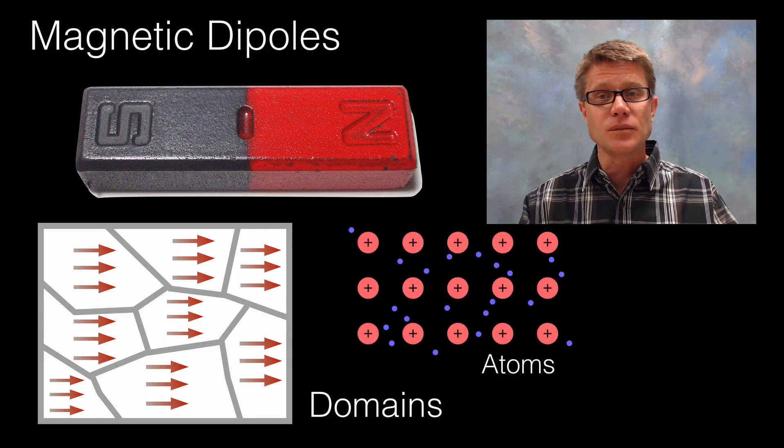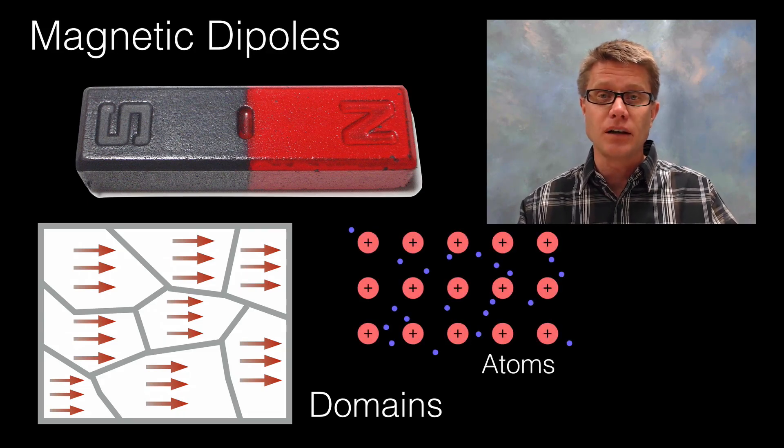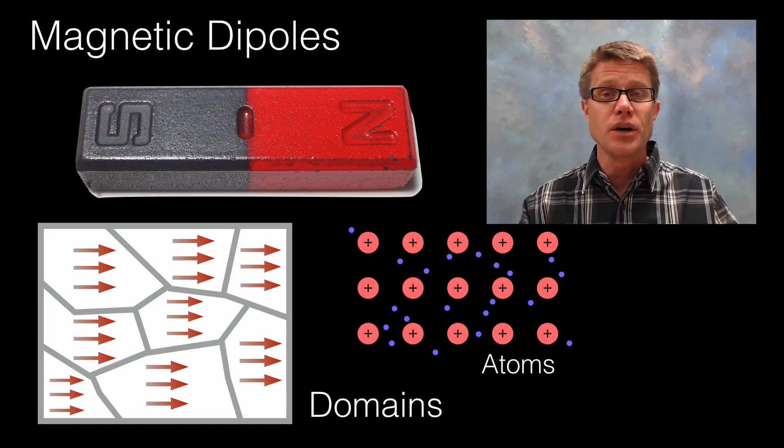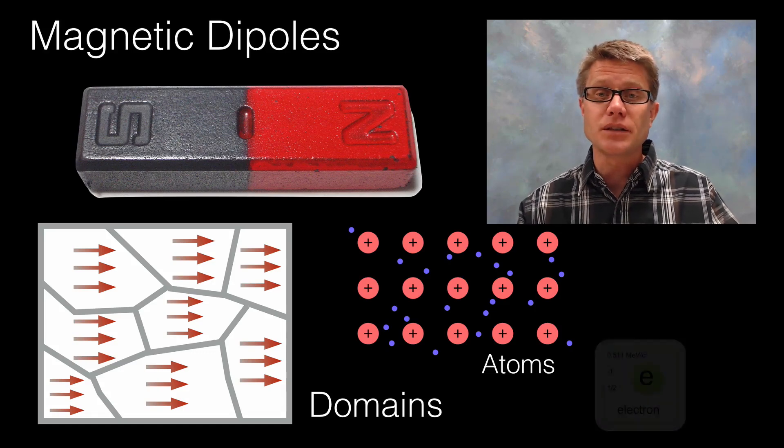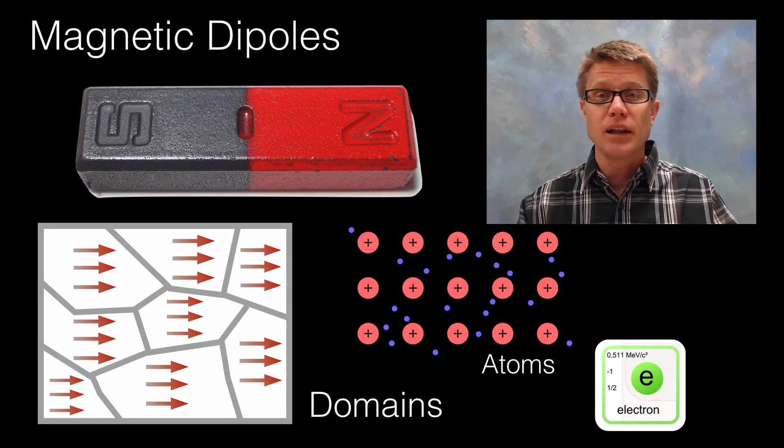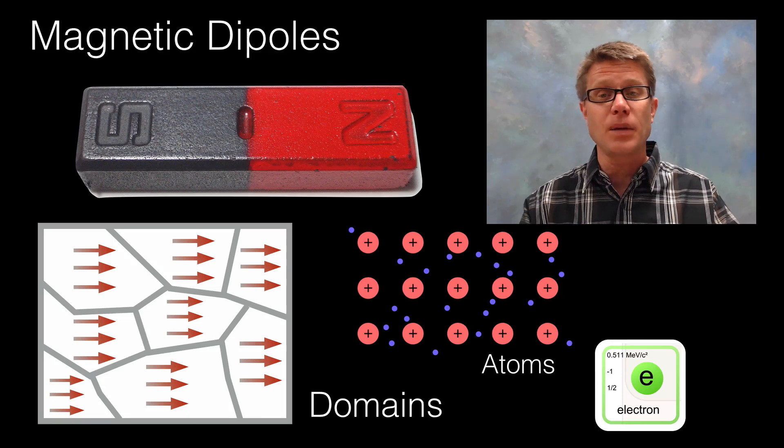Well it is not. It could be the atoms as well. If we look at the atoms themselves, those are made up of charges. And so those can have dipoles. And even if we get to the level of electrons, electrons because of their spin are magnetized as well. So at all levels through in the magnet we can see these dipoles.